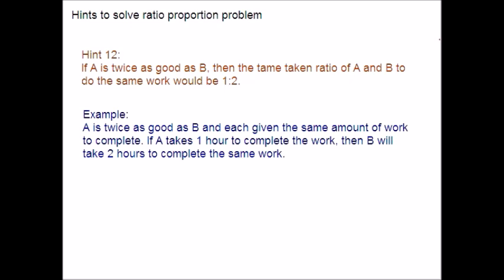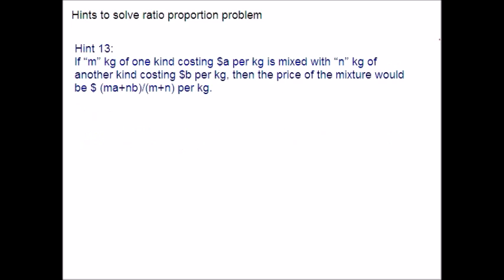You will definitely get some problems of this type. If M kg of one kind costing dollar A per kg is mixed with N kg of another kind costing dollar B per kg, then the price of the mixture would be (MA + NB) over (M + N) per kg. Please make note of this formula. When you are dealing with cost problems, you can use this formula.